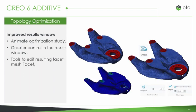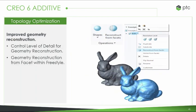We also have an improved results window. When you run your optimization study, you're able to have more control over how you view those results. We have an animation that runs through the whole process — starting with the piece you gave it and slowly going through those iterations — you can animate those iterations to see how it got to the final part. Greater control in the results window means seeing what it looks like and understanding exactly what's going on with your product. You also have more tools to edit the resulting reconstructed mesh, controlling how the faceted piece goes into that CAD model that you're able to make changes to, including new tools for the detail of reconstruction and facet from within freestyle.